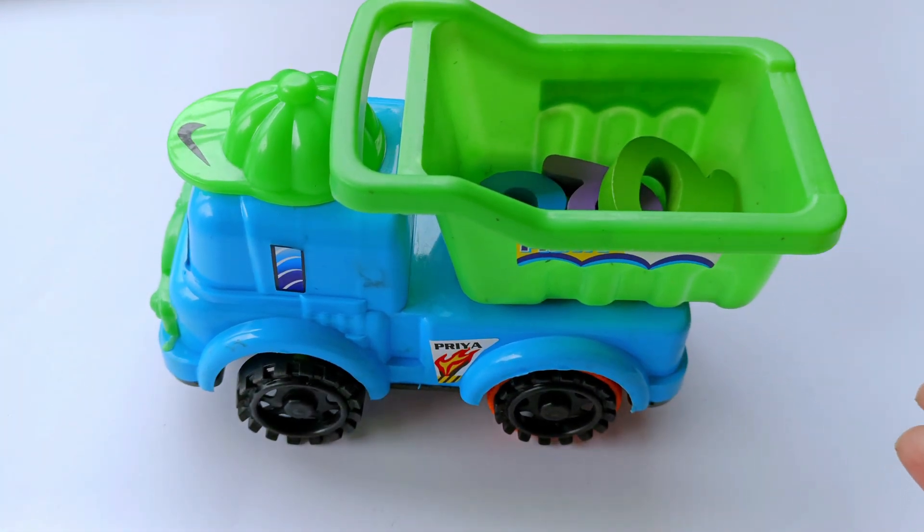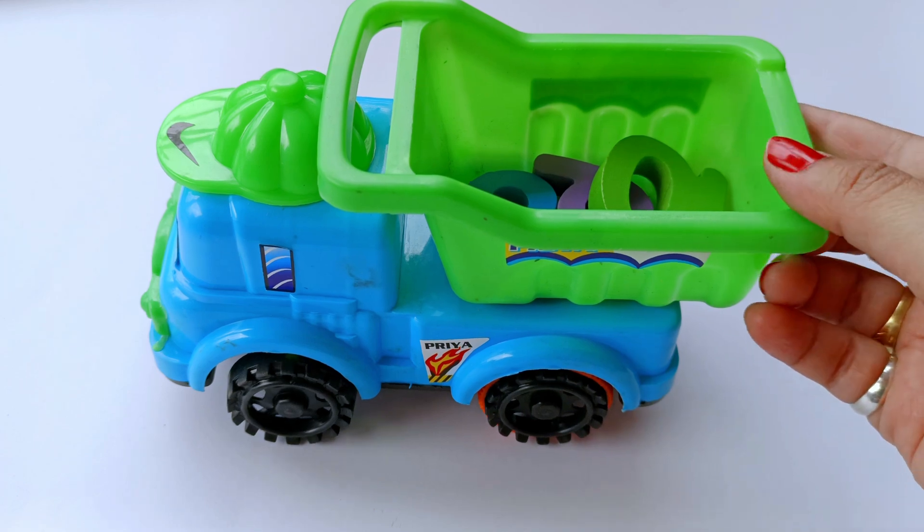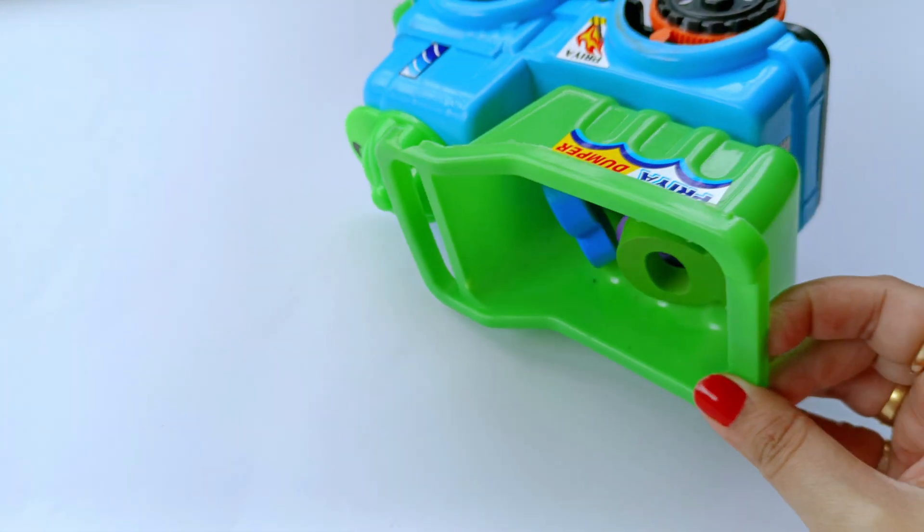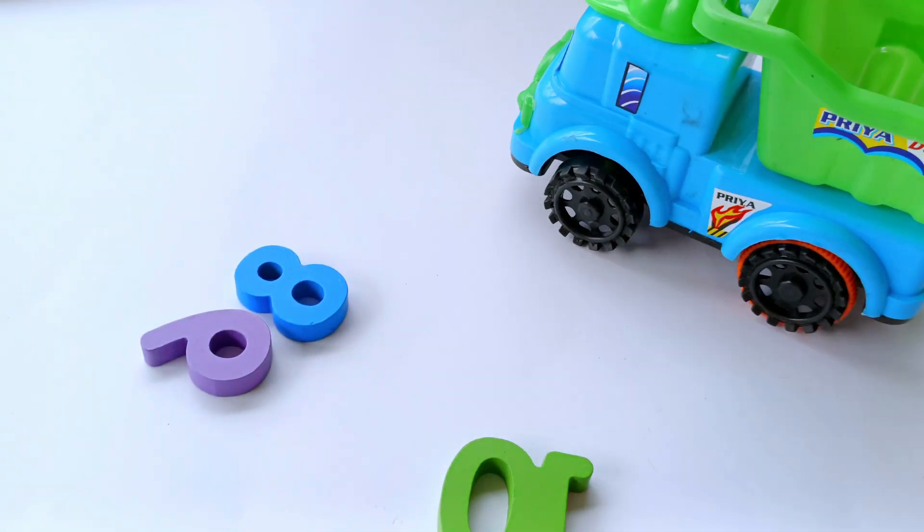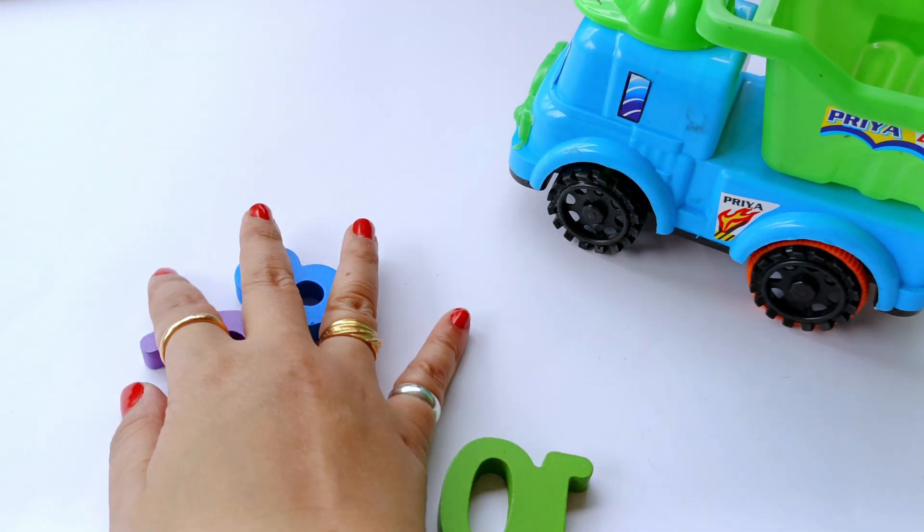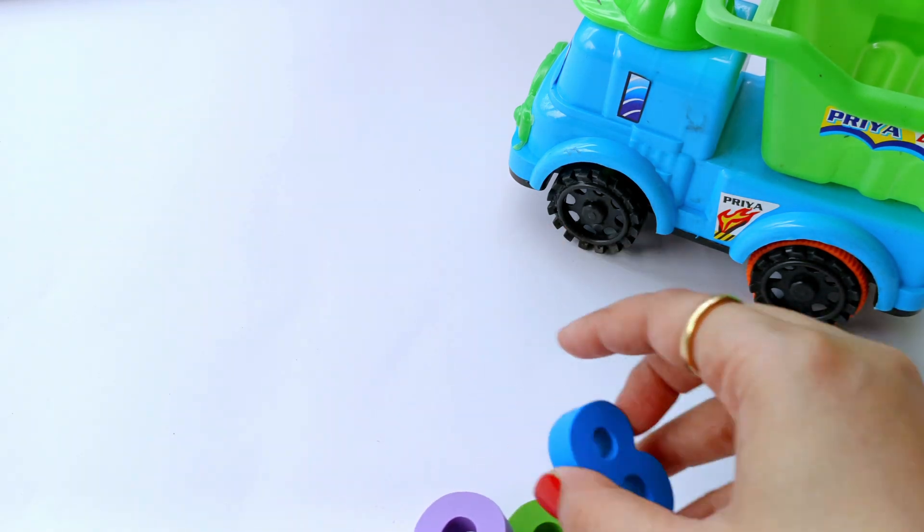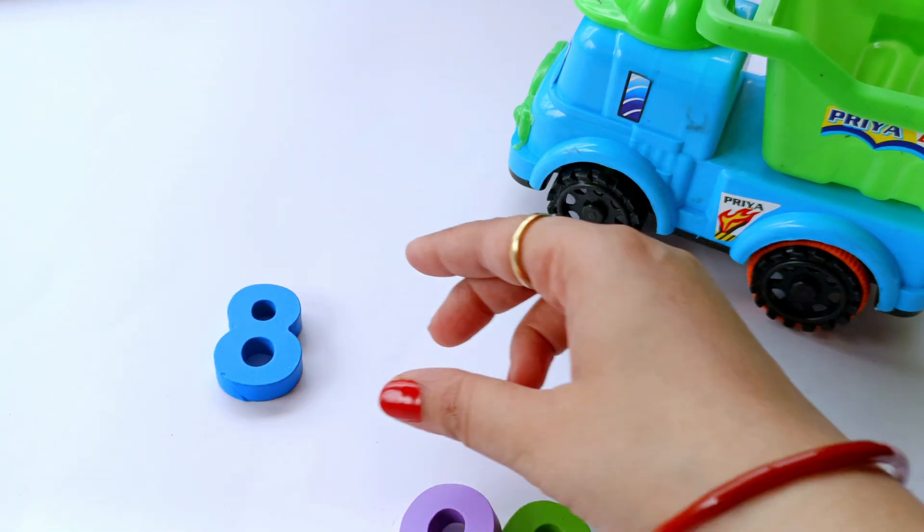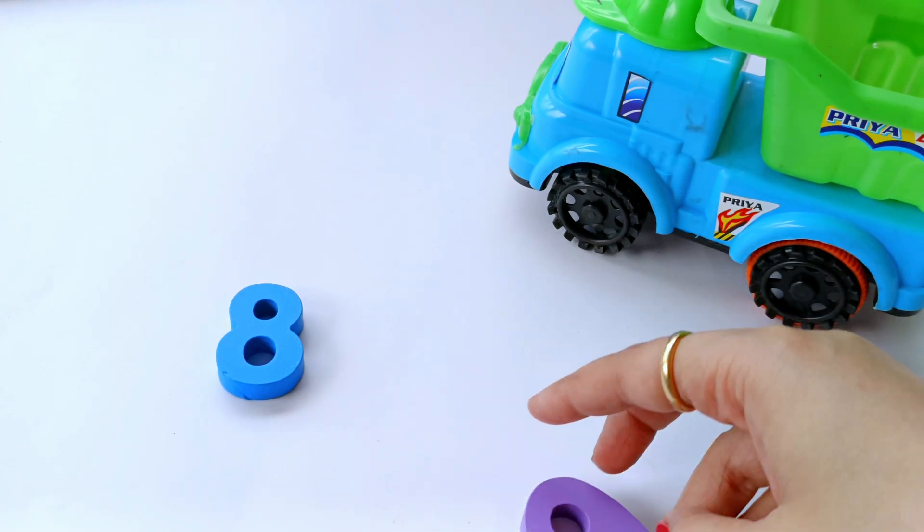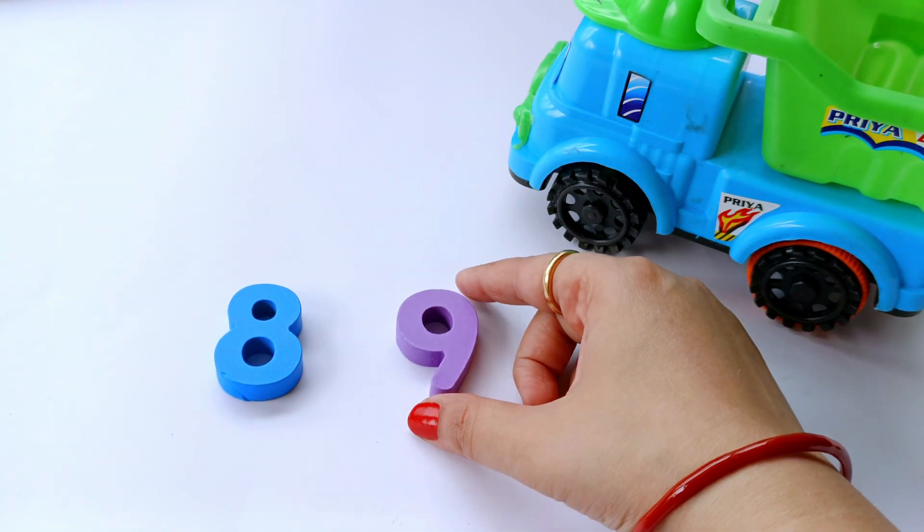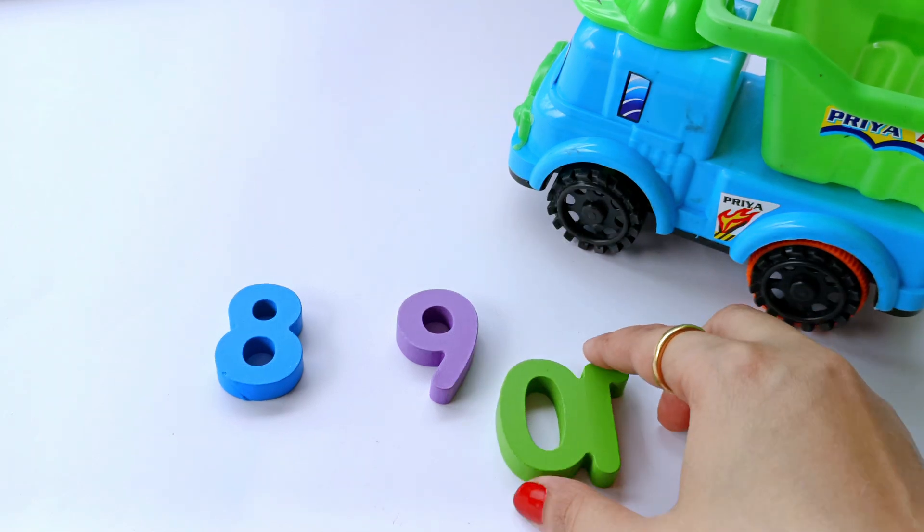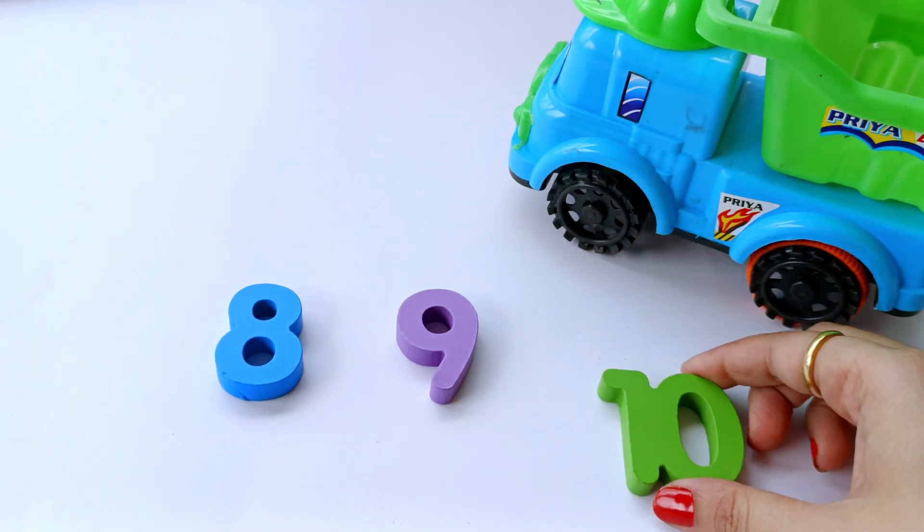Oh look, here is mini truck. Let's see what's there inside. Look, it's carrying colourful numbers. Number 8, it's blue in colour. Number 9, it's purple in colour. And number 10, it's green in colour.